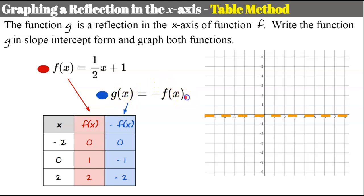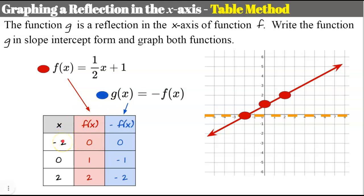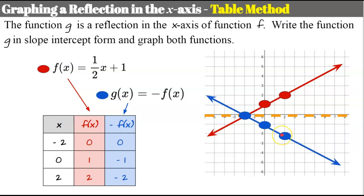Now let's graph these points. For function f: (negative 2, 0), (0, 1), (2, 2). For function g in blue: (negative 2, 0), (0, negative 1), (2, negative 2). There is function g, just like we got algebraically. Written in slope-intercept form: y-intercept of negative 1 and slope of negative 1/2. That's the table method.